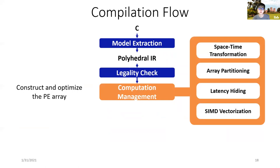latency hiding, in which loop transformation is performed to hide the computation latency and achieve fully pipelining, and lastly, SIMD vectorization, in which we vectorize computation inside PEs to amortize the control overheads.